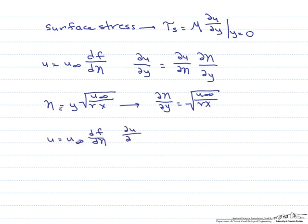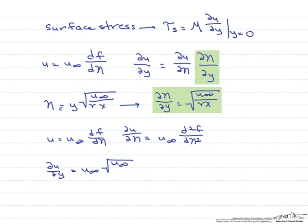This makes d eta dy equal to this quantity under the square root. So du d eta is just u infinity d squared f d eta squared. So let's put them all together. du dy therefore equals u infinity times the square root of u infinity divided by nu times x times d squared f d eta squared. In order to solve for du dy and therefore our shear stress,